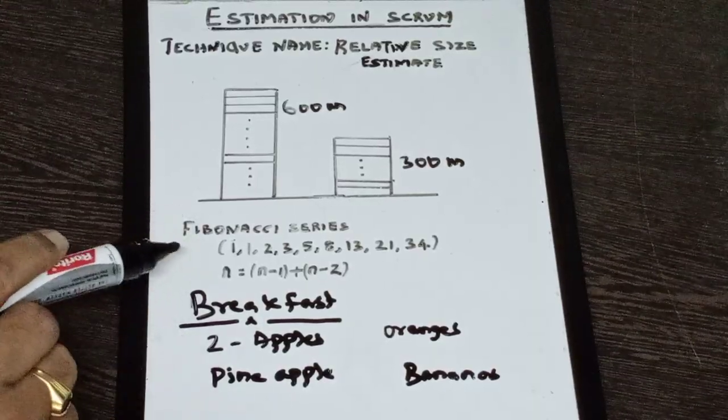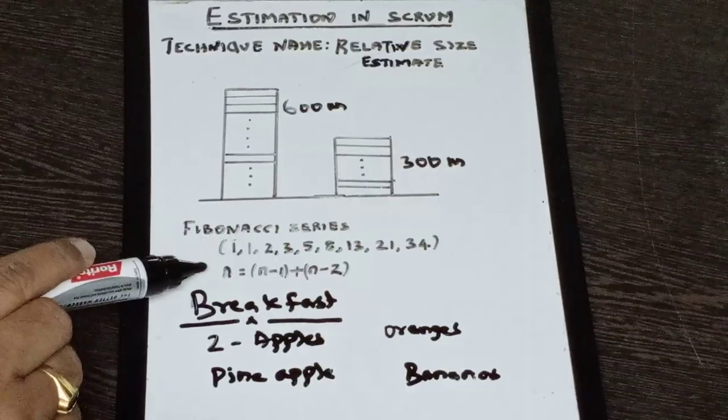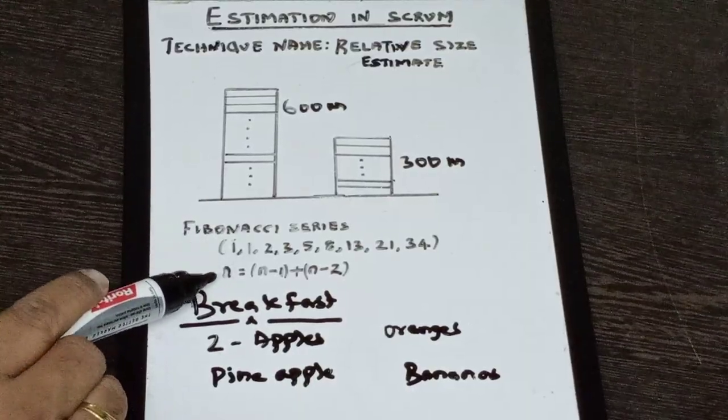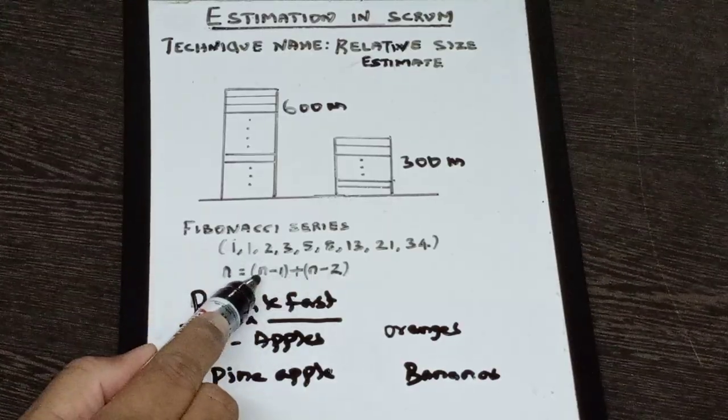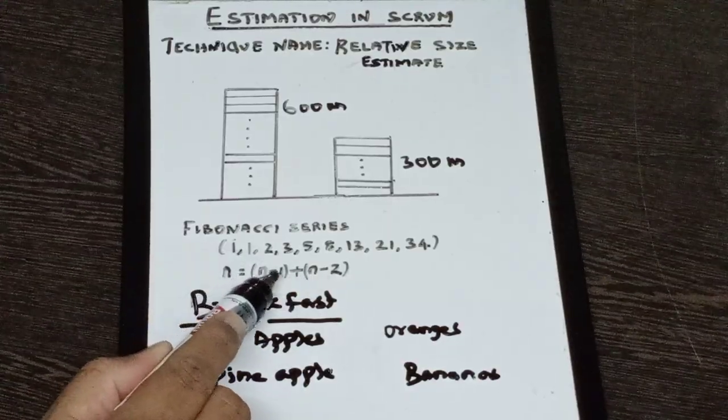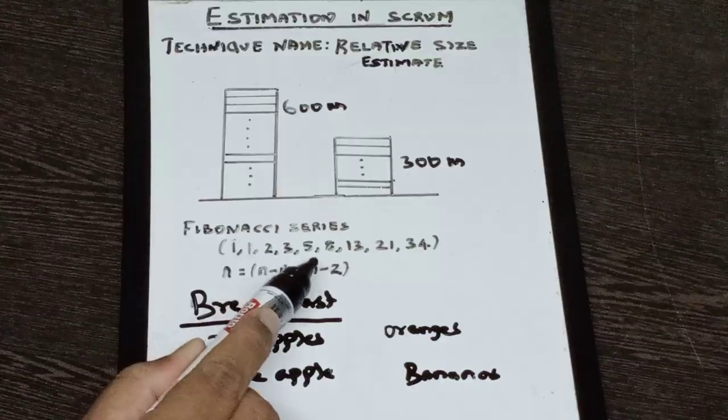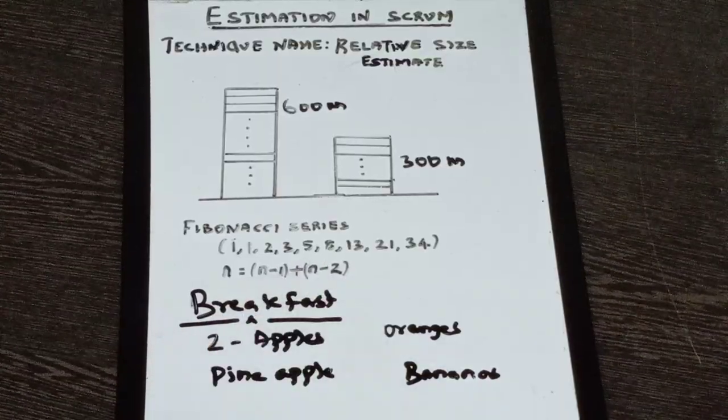And the formula we use to generate the Fibonacci series is n, which is the current number, which is the addition of the previous two numbers in the series. That is, it is a summation of n minus 1 plus n minus 2.